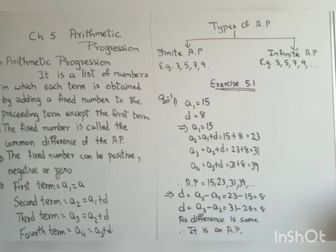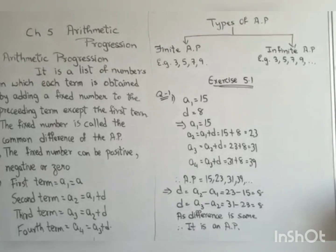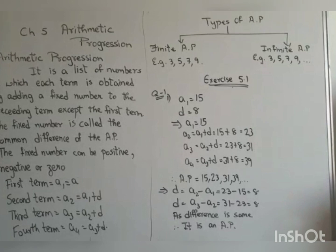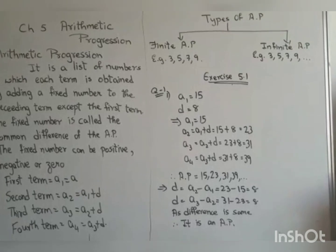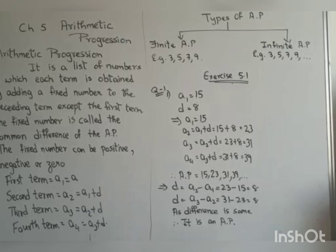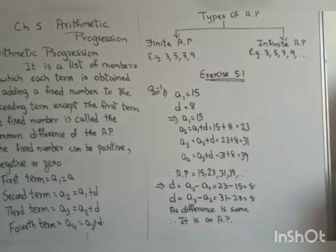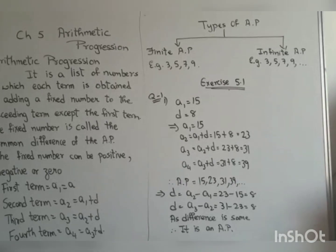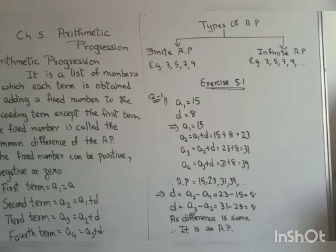Today we are going to start with exercise 5.1. The question is: in which of the following situations does the list of numbers involved make an arithmetic progression and why? First we have to form the list of numbers, and then check whether it is an arithmetic progression or not.